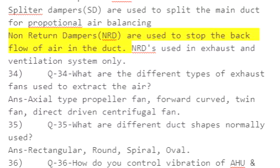Q43: Chiller and pump interlocking — answer: high pressure cut out, oil pressure, high suction superheat, antifreeze. Q44: What are the temperature and relative humidity required for human comfort? Answer: 22 ± 2 degrees Celsius and 50% relative humidity.